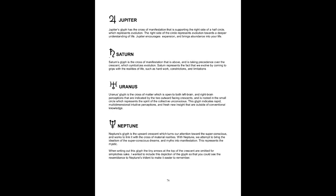Neptune. Neptune's glyph is the upward crescent which turns our attention towards the superconscious and works to link it with the cross of material realities. With Neptune, we attempt to bring the idealism of the superconscious — dreams and myths — into manifestation. This represents the mystic. When writing out this glyph, the tiny arrows at the top of the crescent are omitted for simplicity's sake. The full depiction resembles Neptune's trident, which makes it easier to remember.